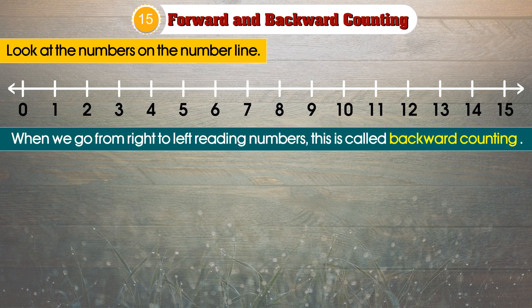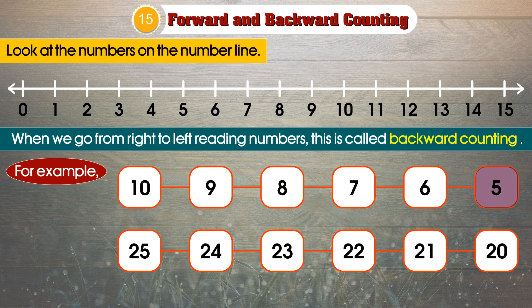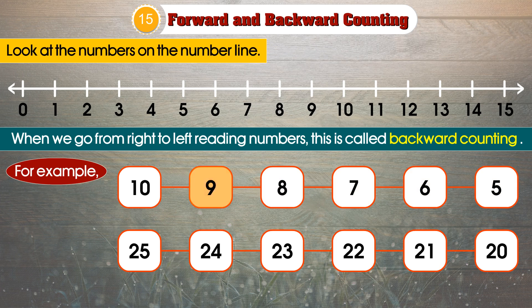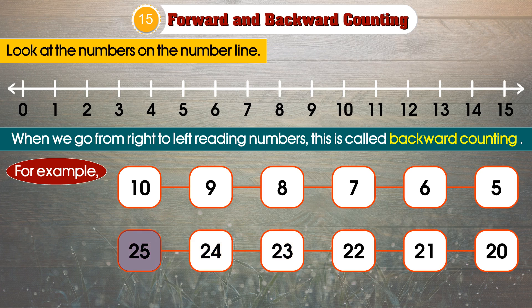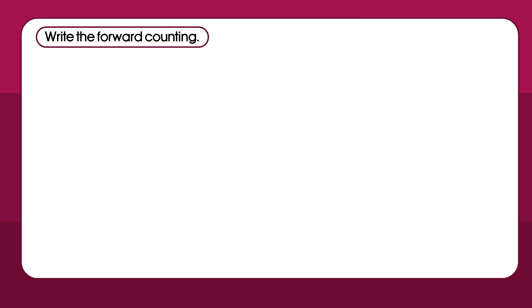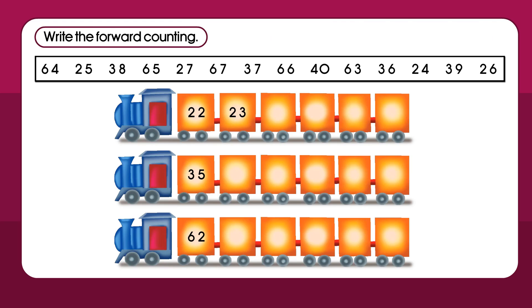When we go from right to left, reading numbers, this is called backward counting. For example: 10, 9, 8, 7, 6, 5... 25, 24, 23, 22, 21, 20.